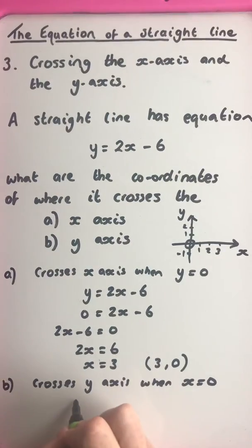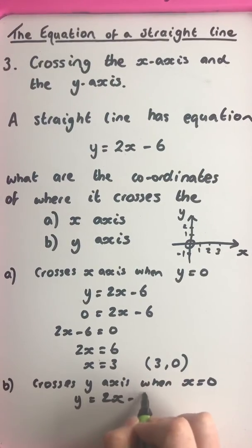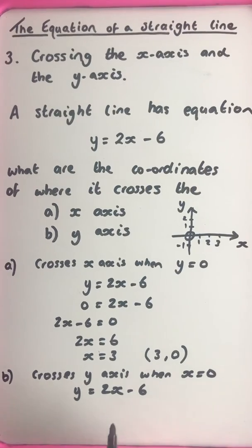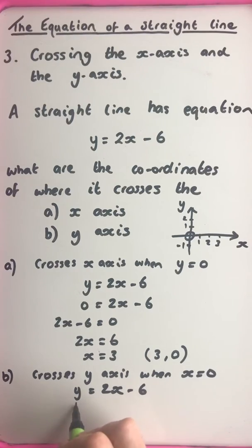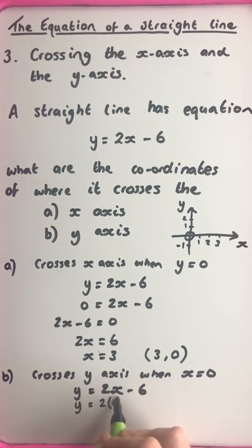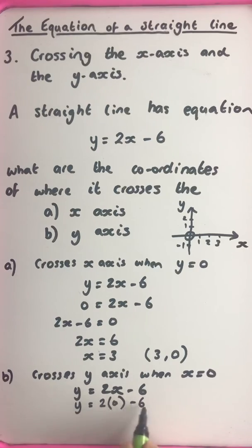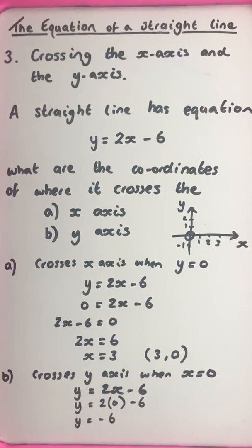So we had an equation y equals 2x minus 6. And x is 0 this time. The left hand side is still equal to the right hand side. So y equals 2 zeros. So let's show that substitution step. Very important. 2 zeros, 0 minus 6. So 0 minus 6 is negative 6.